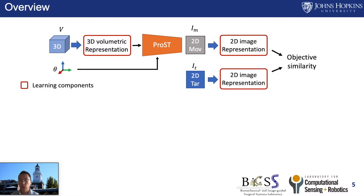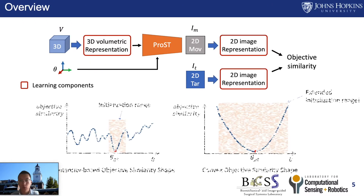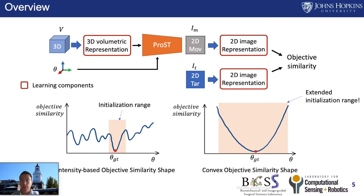In this work, we develop a projective spatial transformer called PROST, which enables differentiable gradient propagation from 2D images to the 3D volume, and especially the pose parameters. We take the 2D-3D registration as an example application and show that the objective similarity function can be reshaped to be convex by learning the 2D and 3D representations.